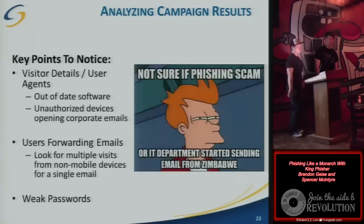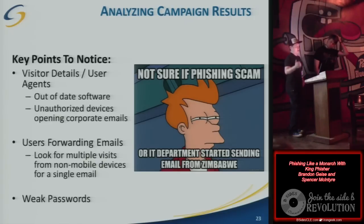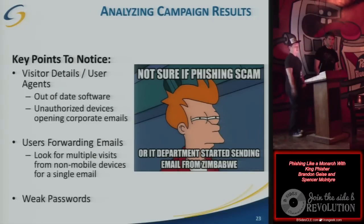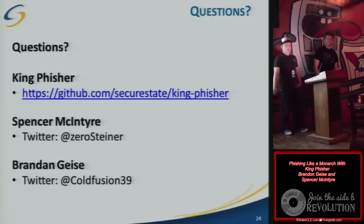Overall, key points to notice: Kingfisher lets you see visitor detail — user agent, what they're running, what IP address it came from, if they're running out-of-date software, and unauthorized devices on the network. It also helps you track if users are forwarding emails — if they are and you don't want them to, you can do the 404 deny. With credential harvesting, if a bunch of passwords come in you can see the password schema and whether they obviously lack complexity. The GitHub link is listed here — or just search GitHub for Secure State and Kingfisher is on there.